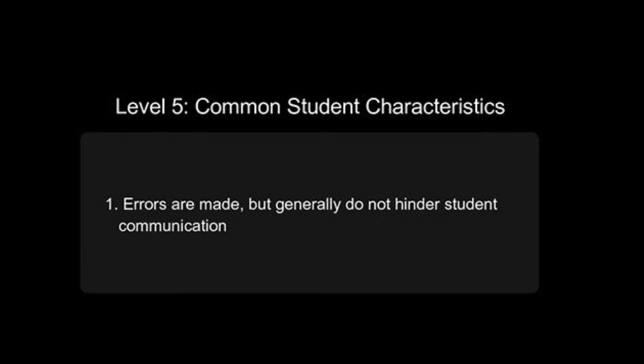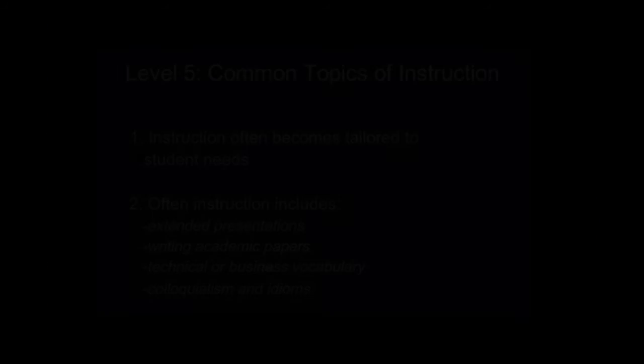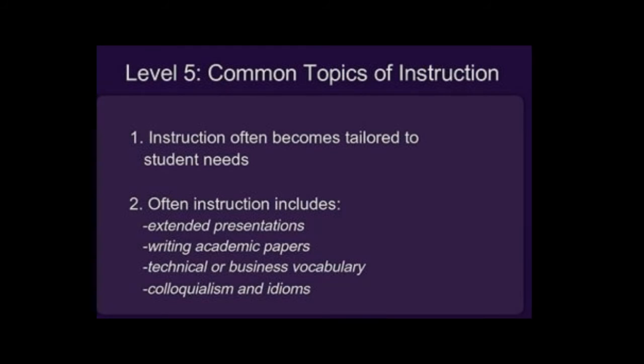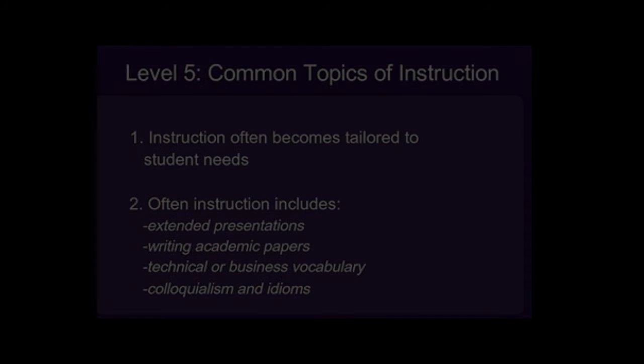Finally, the highest level — level five. CSU calls that advanced and TESOL calls it bridging. At this level learners are near proficient. They still make occasional errors as adult learners always will, but generally that doesn't hinder their communication. At this level you're going to be focusing on whatever they specifically need English for — helping them create extended presentations or write academic papers, learning technical vocabulary for their job, and working on colloquialisms and idioms to help them sound more like a native speaker.